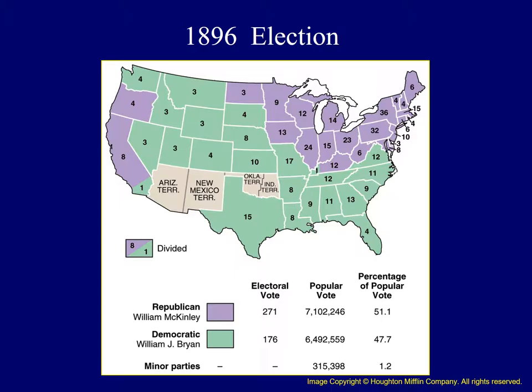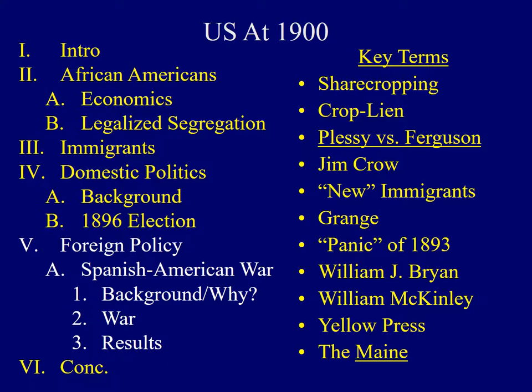In the end, William McKinley won with about 51% of the popular vote. Notice where Bryan had most of his support — the South as well as segments of the West. William McKinley was very strong in the Northeast, the Great Lakes, and in California and Oregon.